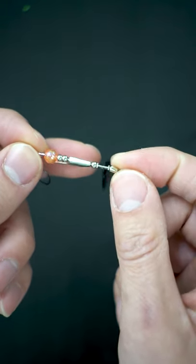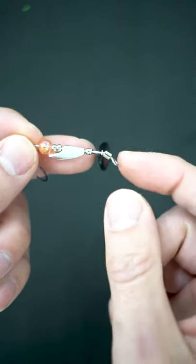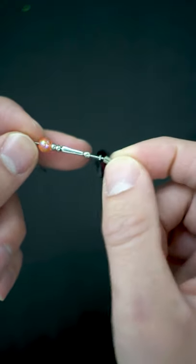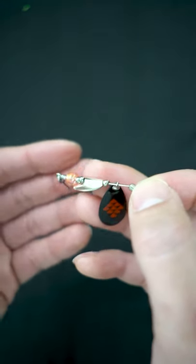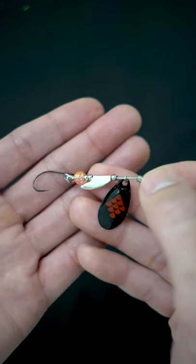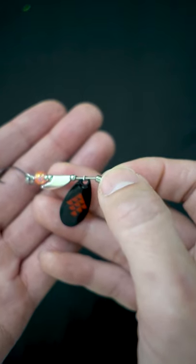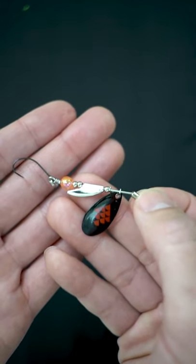This actually reduces line twists. And in addition, you can see that it has a swivel right here at the head. So this whole thing right here will reduce line twists. If that's something you guys are looking into, you guys don't like the line twist in spinning reels, this might be perfect for you.